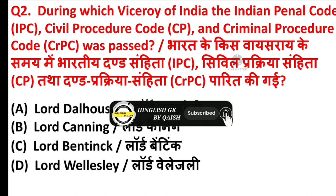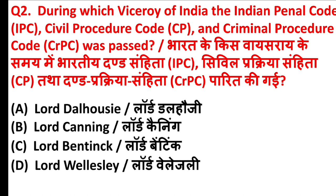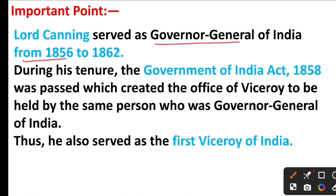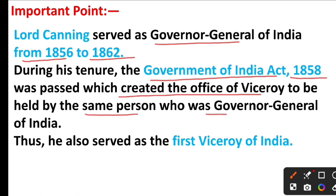During which Viceroy of India were the Indian Penal Code, Civil Procedure Code, and Criminal Procedure Code passed? The answer is Option B, Lord Canning. Lord Canning served as Governor General of India from 1856 to 1862. During his tenure, the Government of India Act 1858 was passed, which created the office of Viceroy to be held by the same person who was Governor General of India. Thus, he also served as the first Viceroy of India.